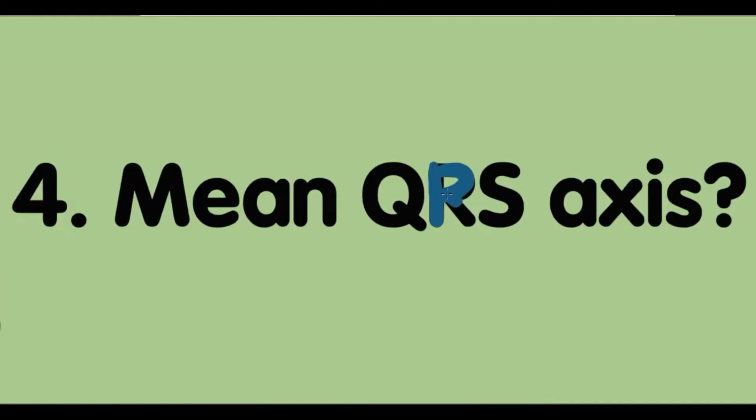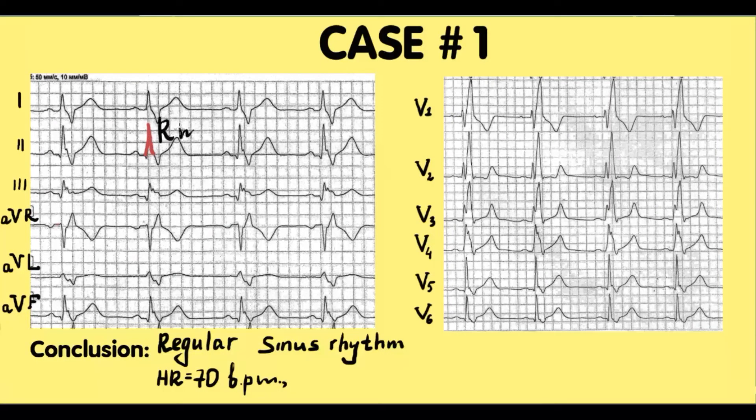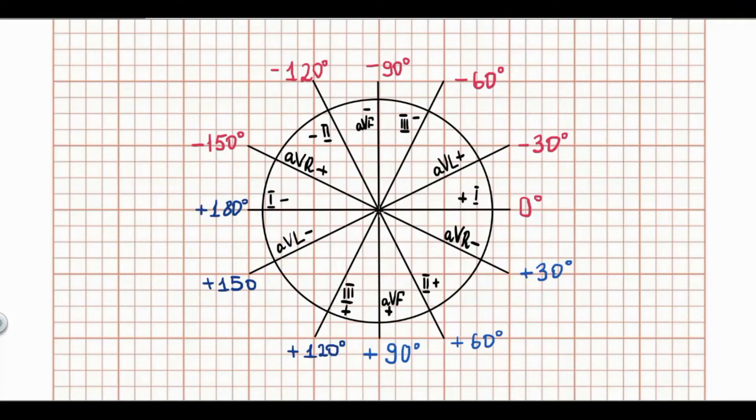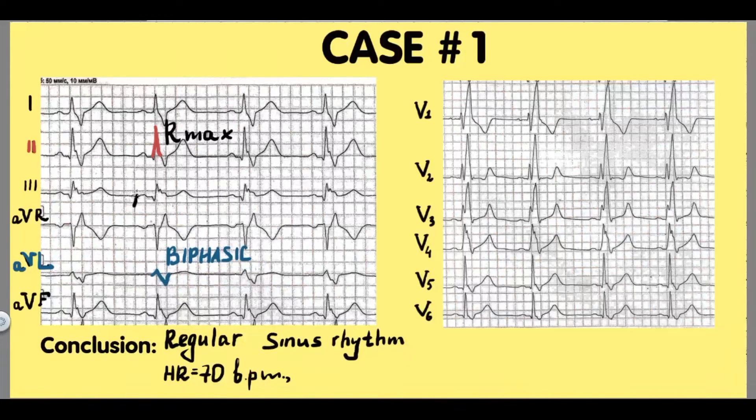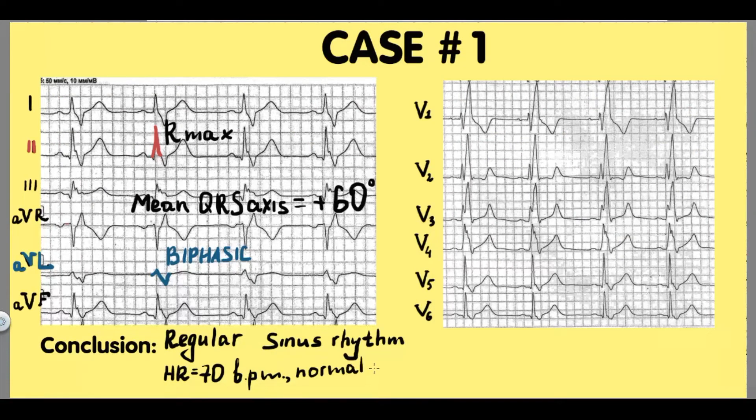The next question is how is the mean QRS axis oriented? For this let's find the maximal R wave and biphasic complex in extremity leads. The maximal R is in second standard lead, and AVL has a biphasic complex. After this we use the hexaxial diagram for determining the mean QRS axis. Maximal R is in second standard lead. Biphasic complex is in AVL. Biphasic complex should be at right angle to the mean QRS axis. The mean QRS axis is plus 60 degrees which is normal electrical position of the heart.